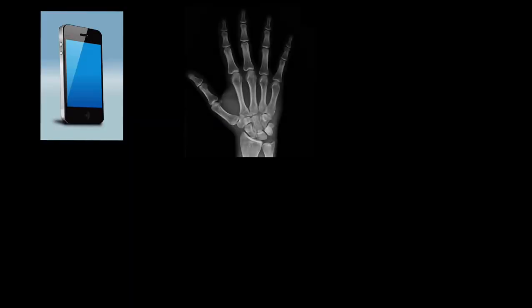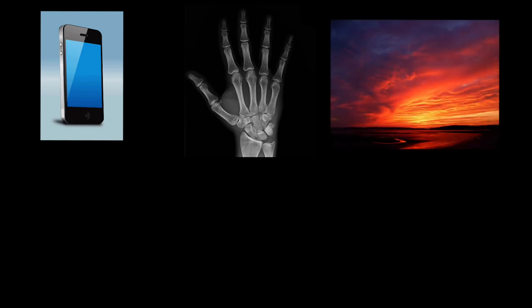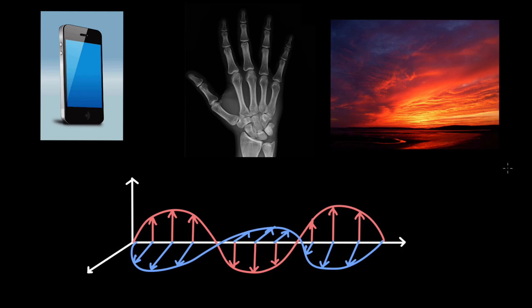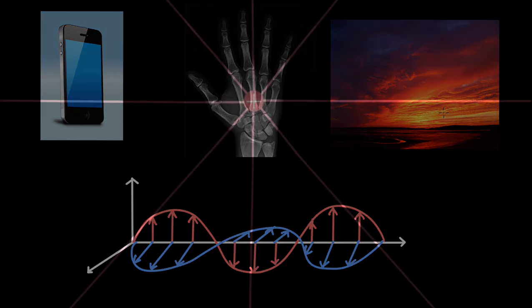We are surrounded by electromagnetic waves — from mobile phones to an X-ray revealing a broken bone, to the beauty of a sunset — all involve electromagnetic waves. In this video we will explore how these electromagnetic waves are created and how they travel or propagate in all directions.